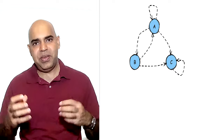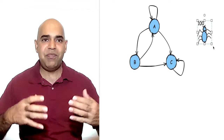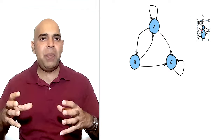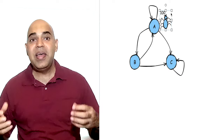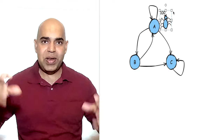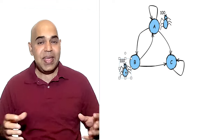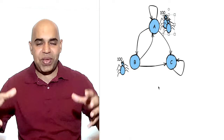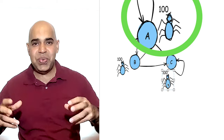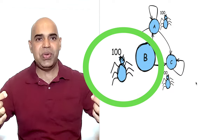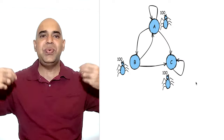Let me explain the random surfer model with an example. Let us say that we have a network. Drop an equal number of spiders on each node — for example, drop 100 spiders on each node of this network. In three nodes, there are a total of 300 spiders. Now ask each spider to use a random outgoing link from wherever it is to jump to another node.